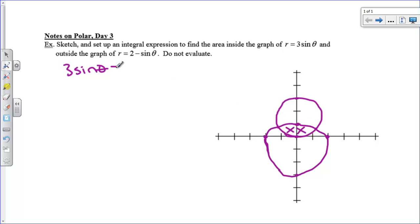So I want to know when does 3 sine theta equal 2 minus sine theta? Well that would happen if 4 sine theta, add sine theta to both sides, is equal to 2, divide by 4 and we get that sine theta equals 1 half. And so my theta values are pi over 6 and 5 pi over 6. And I guess I can believe that. I didn't do too bad of a job but I can believe that that angle right there is about 30 degrees and that this one over here is about 150 degrees.